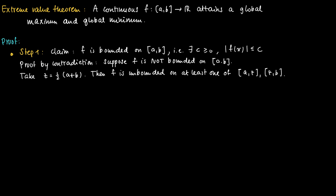We construct a second interval. Given [a, b], we define a closed interval [a1, b1], where [a1, b1] is the half on which f is unbounded. If we have flexibility in the sense that f is unbounded on both intervals [a, z] and [z, b], then we just pick the left one, [a, z]. That is the default option in case f is unbounded on both parts.